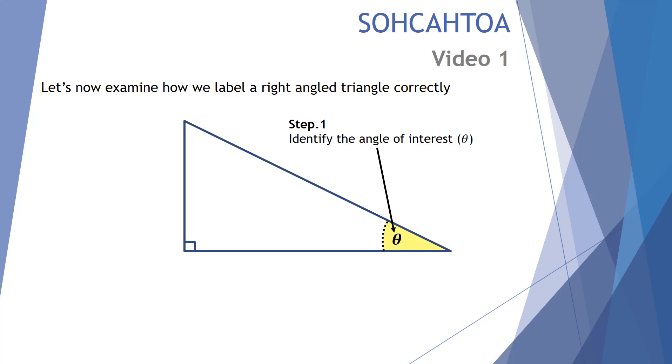First, let's look at how we label our triangle correctly. For this example we're going to use the bottom right hand corner angle as the angle of interest and we'll represent this angle with the value theta.